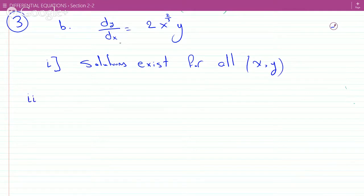Now for part two, we need to say where they exist and are unique according to the existence and uniqueness theorem. So for this one, we can take our f to be 2x to the 2/3rds y and find the partial with respect to y. So that becomes just 2x to the 2/3rds.